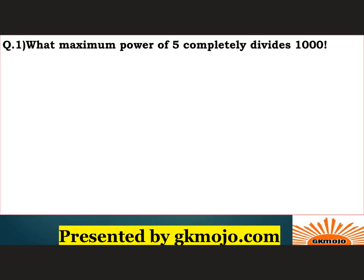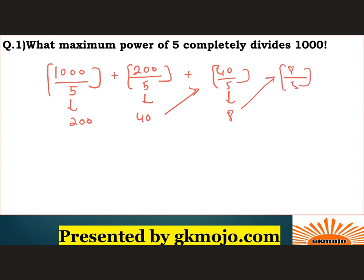Once you see the example you will understand what I am talking about. So let's jump to the example straight away. We've seen the complete theory, now let's see how the question works. What maximum power of 5 completely divides 1000 factorial? So take 1000, divide by 5, quotient is 200. Now take this 200 and again divide by 5, quotient is 40. Again take 40, divide by 5, quotient is 8. Now you cannot divide 8 by 5 further, so add them up: 200 plus 40 is 240, plus 8 is 248. So the maximum power of 5 which completely divides thousand factorial is 249.